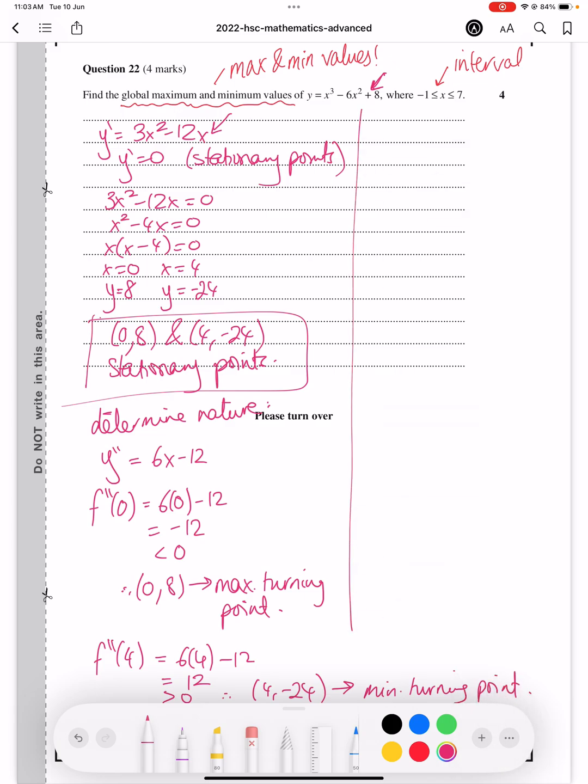Now, all that's left is to find the end points of our interval. And so we find that by plugging in x equals to minus 1 into the original equation. So we get y equals to 1, and when x equals to 7, y equals to 57.